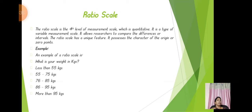Next we have ratio scale — the term ratio itself denotes the meaning of ratio scale. This type of variable measurement scale will help to compare the differences or intervals. The ratio scale has a unique feature: it possesses the character of the origin or a zero point. An example of a ratio scale is: 'What is your weight in kg?' — less than 55 kg, 55 kg to 75 kg, 76 to 85 kg, 86 to 95 kg, or more than 95 kg. So it helps to compare the difference.